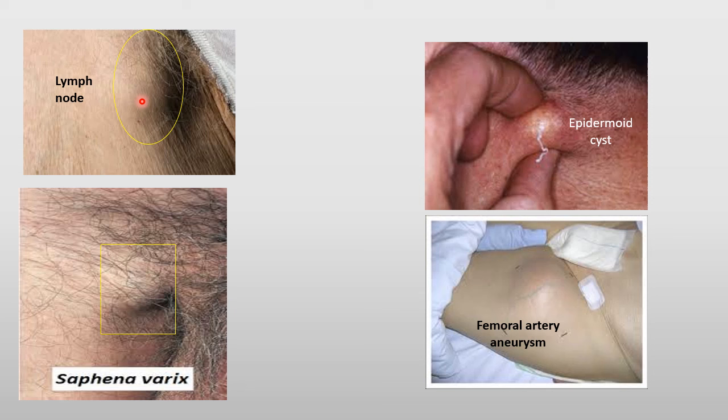This is a case of a saphena varix — a dilatation of the long saphenous vein at its entrance into the femoral vein in patients with varicose veins. You can see a bluish discoloration suggestive of venous congestion. This is an infected epidermal cyst with some discharge of pus. And this is a femoral artery aneurysm in the groin, which is common among drug addicts who inject directly into the femoral artery.